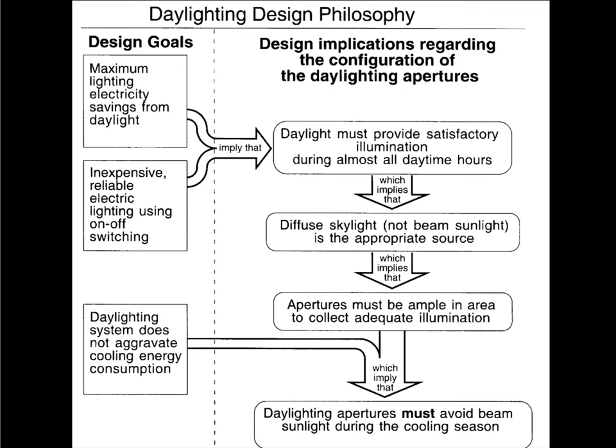When we start a design problem we try to define some design goals, and typically once we do that there are design implications regarding the configuration of the building, or in this case the configuration of daylighting apertures. Among the design goals we've set here is we want to maximize lighting electricity savings from the daylighting. Maximizing can be a very vague word, and anything we maximize is always within the context of other factors. So this is not so much a precise statement of a goal as it is a general aspiration.